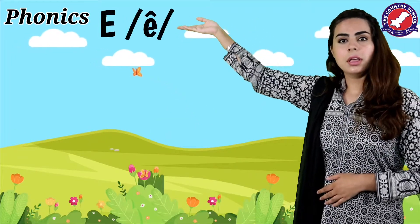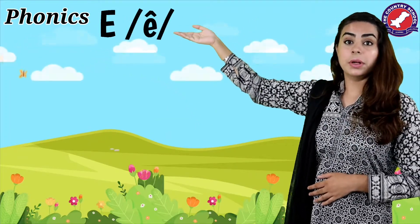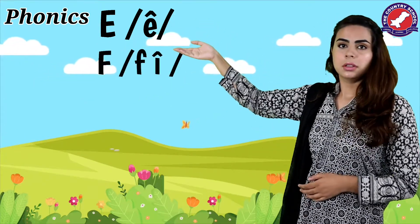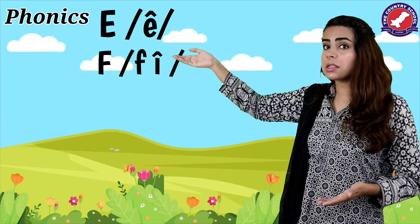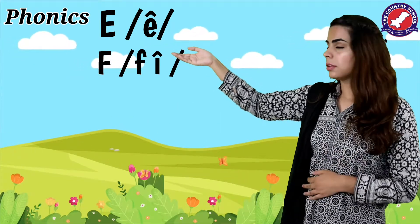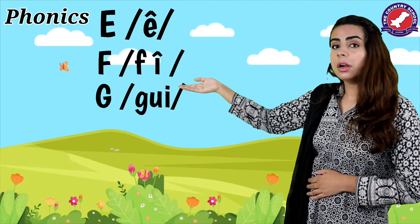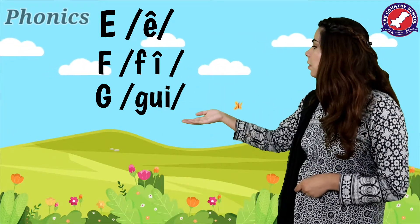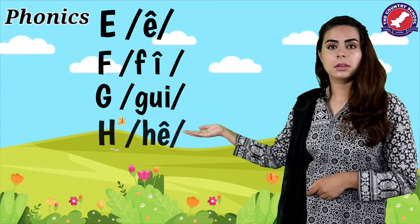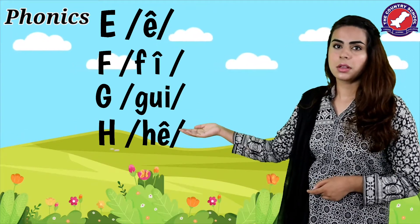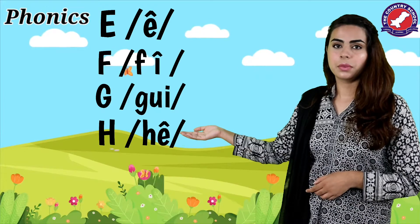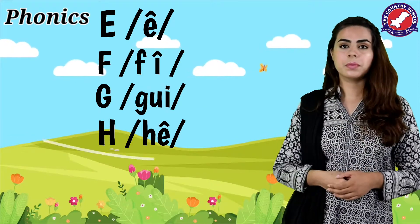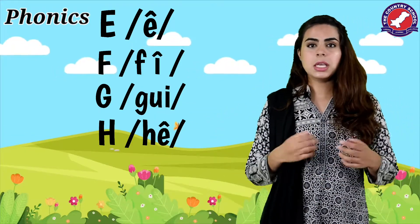E — it gives us the sound of A. F gives us the sound of F. G gives us the sound of G. And then — come on, you all know what this letter is — H gives us the sound of H. Now we'll see words we can make with these letters.